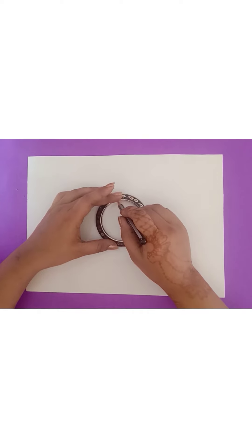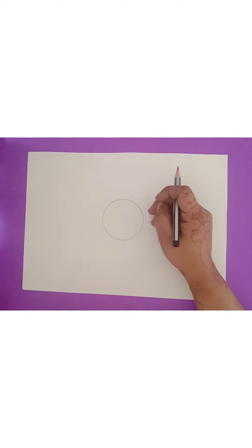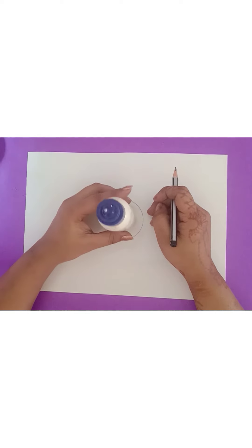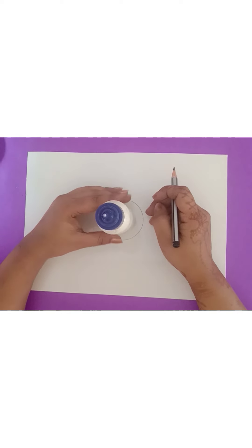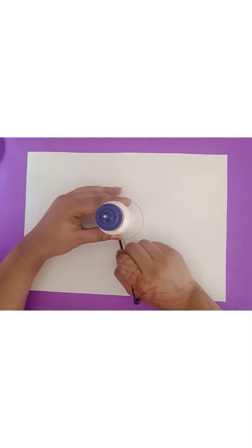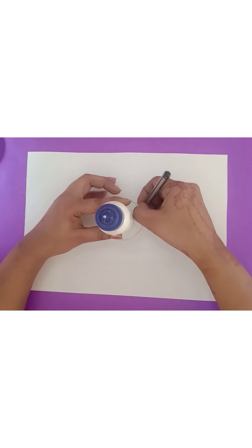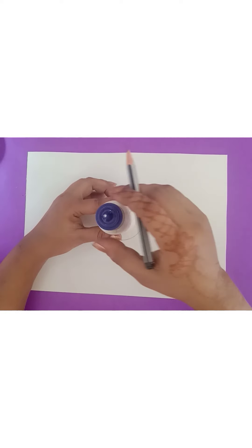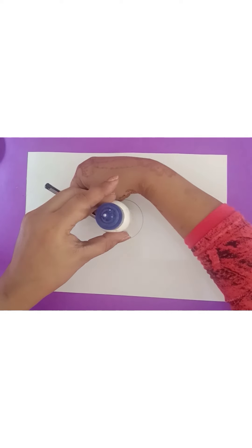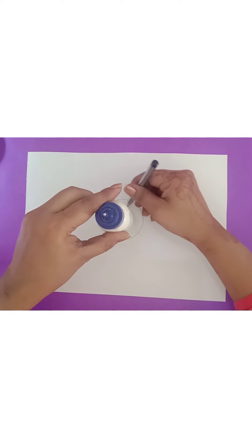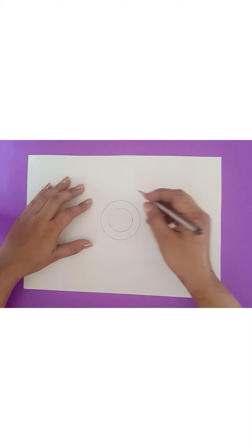Firstly, in center, draw a big circle with the help of your bangle. After that, take a small circle. See, I am having this Fabi-Col bottle and draw a small circle here.